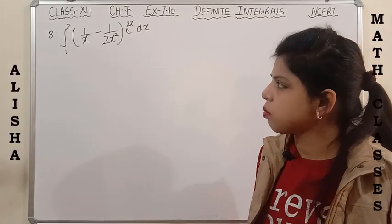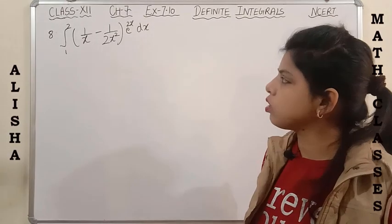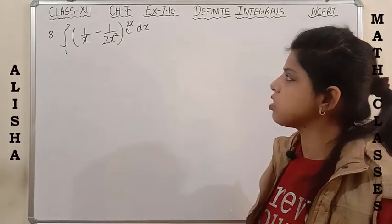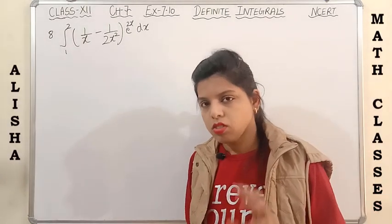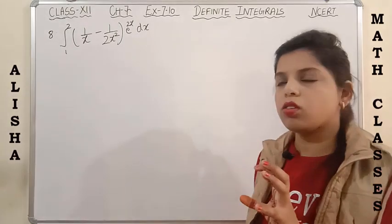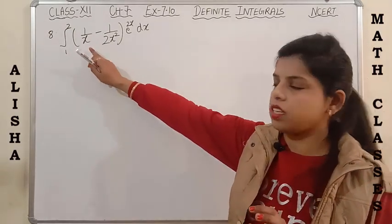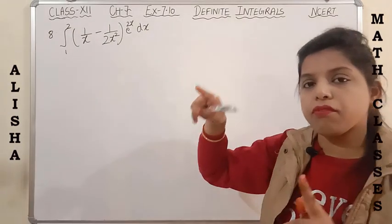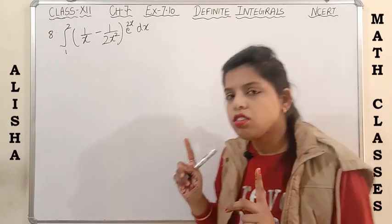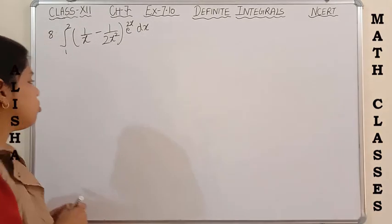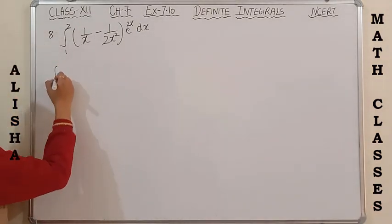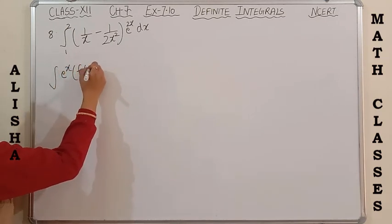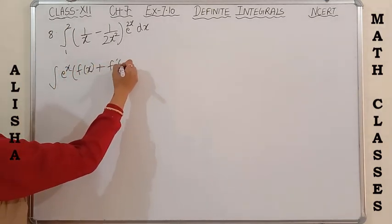Next question is question number 8: integration with limits 1 to 2 of (1/x - 1/(2x²)) × e^(2x) dx. Looking at the integrand, we can see this is in the form of e^x × [f(x) + f'(x)], so first I am going to tell you this is in the form of e^(x) × [f(x) + f'(x)].